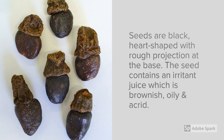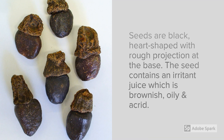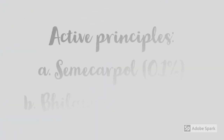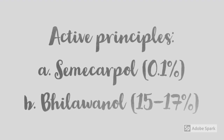The seed contains an irritant juice which is brownish, oily, and acrid. The active principles that impart irritant property to the juice of Semicarpus are Semicarpal (0.1%) and Vilavanal (15–17%). Semicarpus is also commonly called Vilava in Hindi, because of which one of its active principles is named Vilavanal.